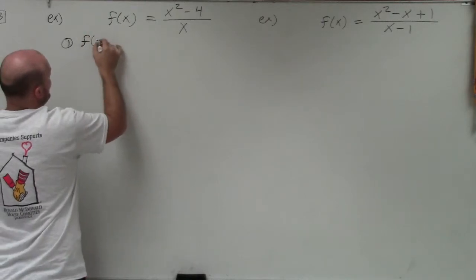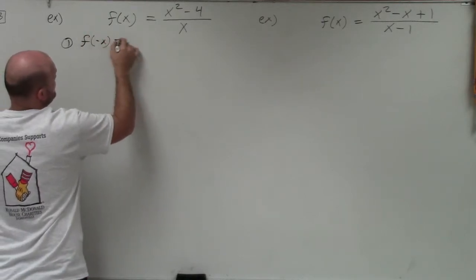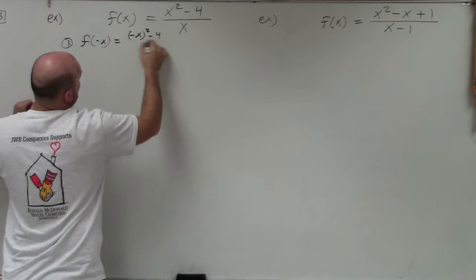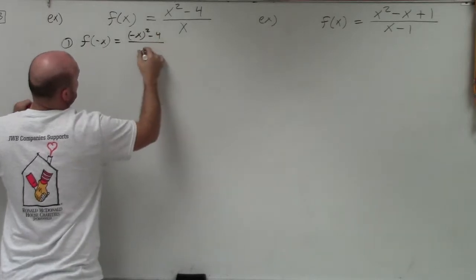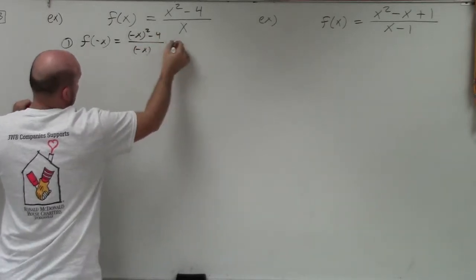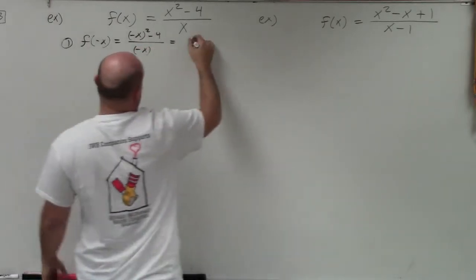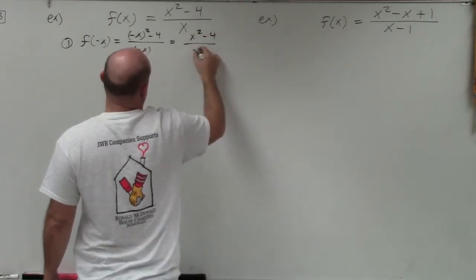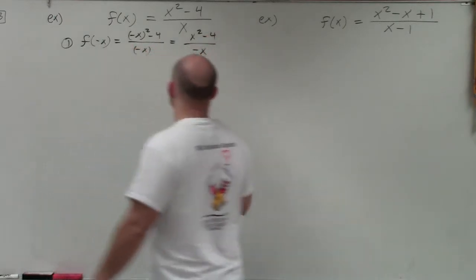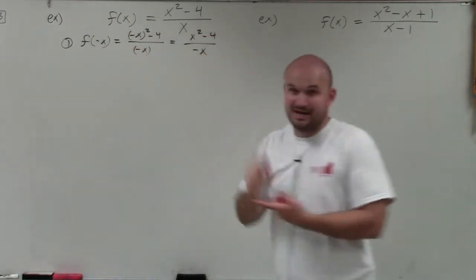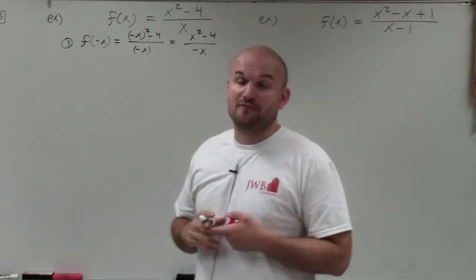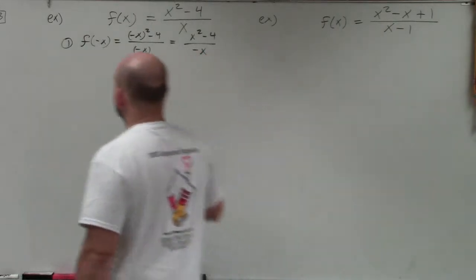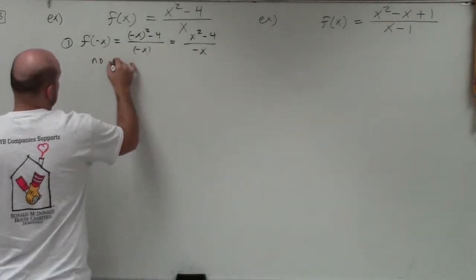I'm going to take f of negative x, and then I do negative x squared minus 4 over negative x. Simplifying that, I get x squared minus 4 all over negative x. So therefore, I do not have the exact same function, nor do I have the negation of the function. So therefore, no symmetry exists.